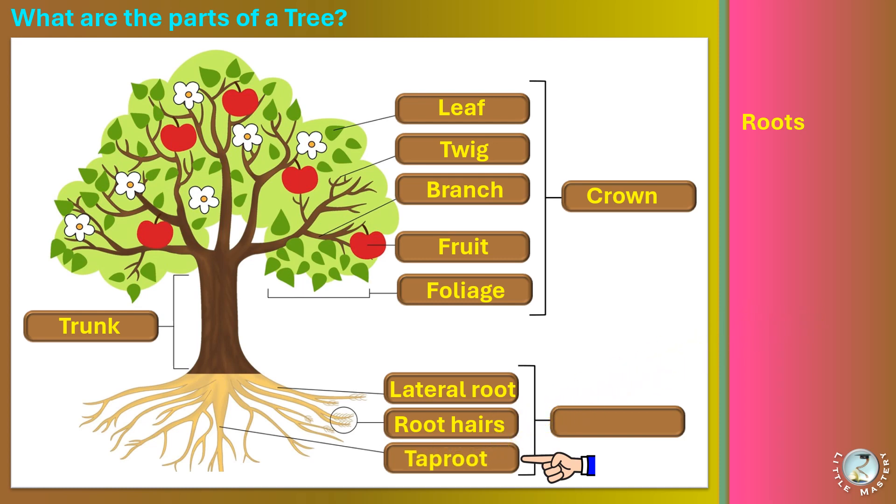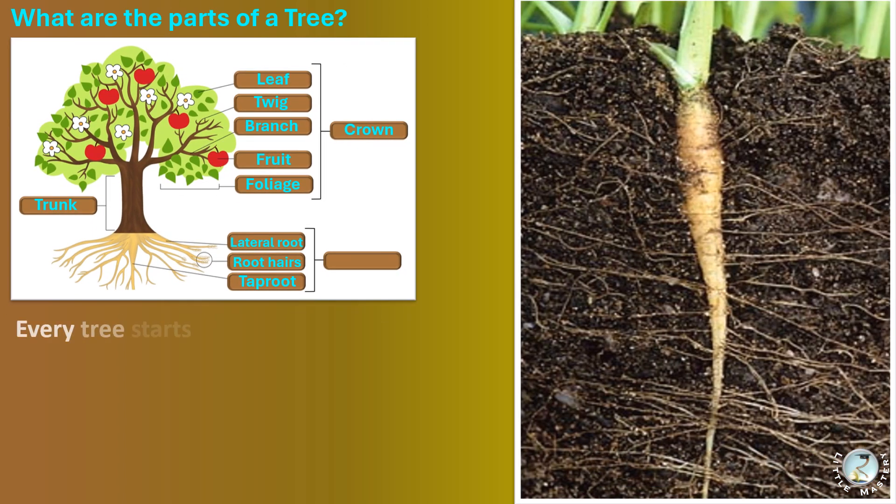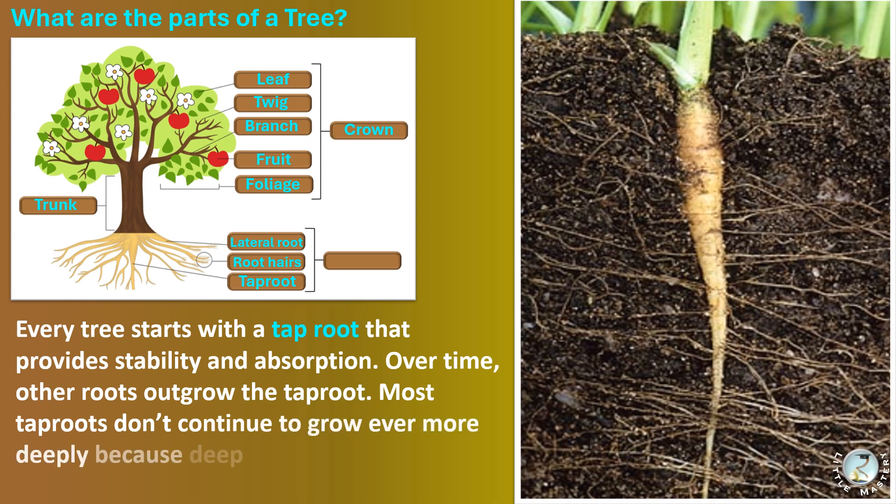Every tree starts with a taproot that provides stability and absorption. Over time, other roots outgrow the taproot. Most taproots don't continue to grow ever more deeply because deep soils lack the oxygen and nutrients that roots need to survive.